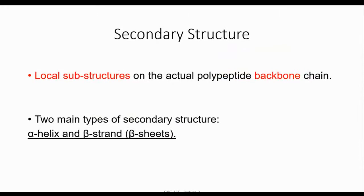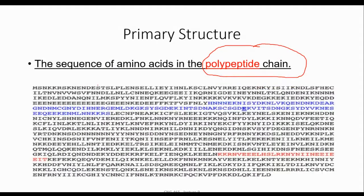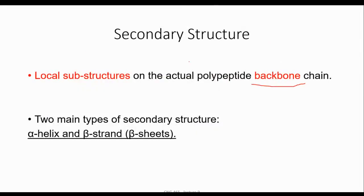What is the secondary structure? Local substructures on the actual polypeptide backbone chain. When we talk about backbone, we are talking about the primary structure again. Inside your sequences, you can find some regions and each one of these regions can be considered as segments. For these segments we can categorize them into two categories: alpha helix and beta strand.